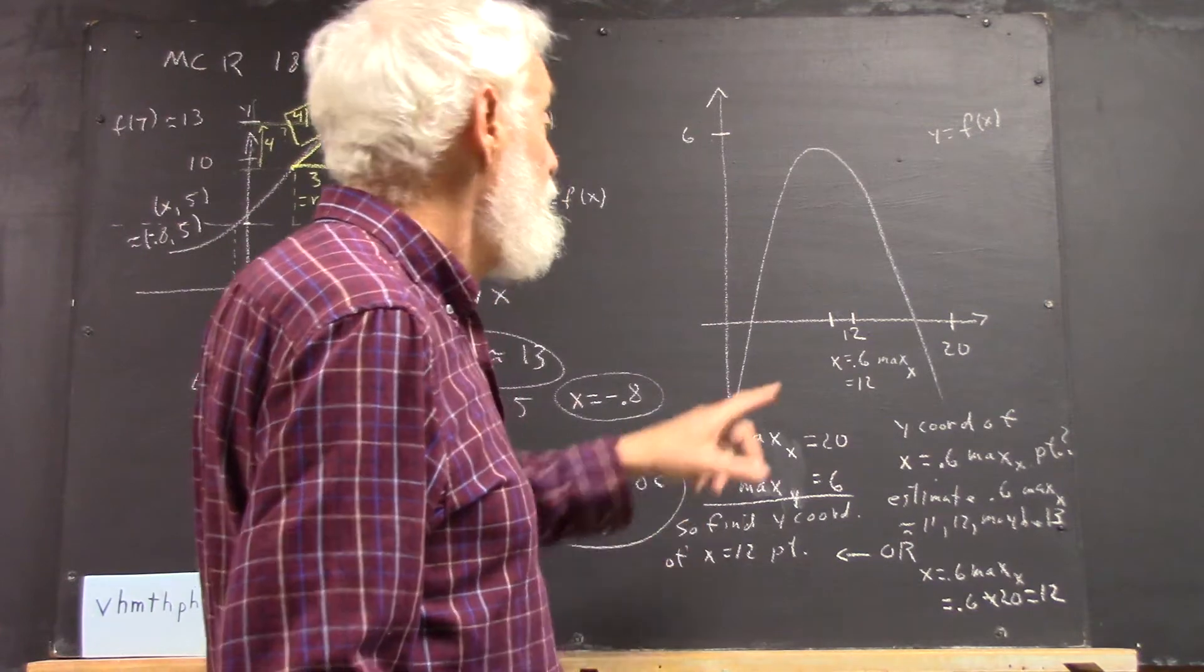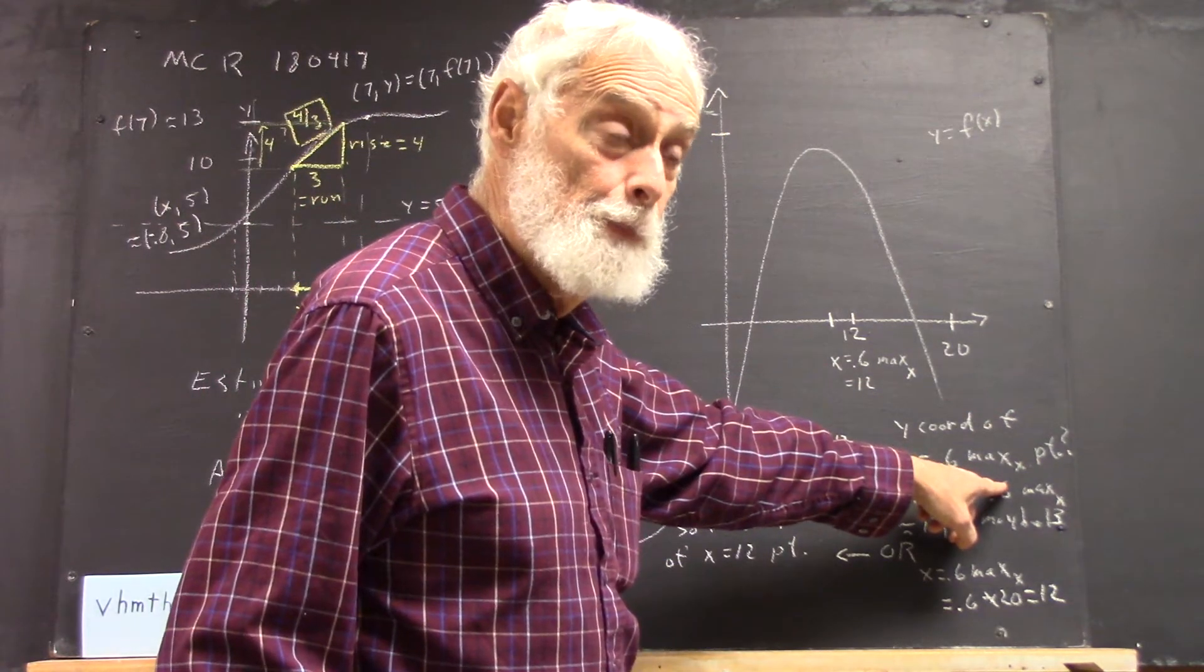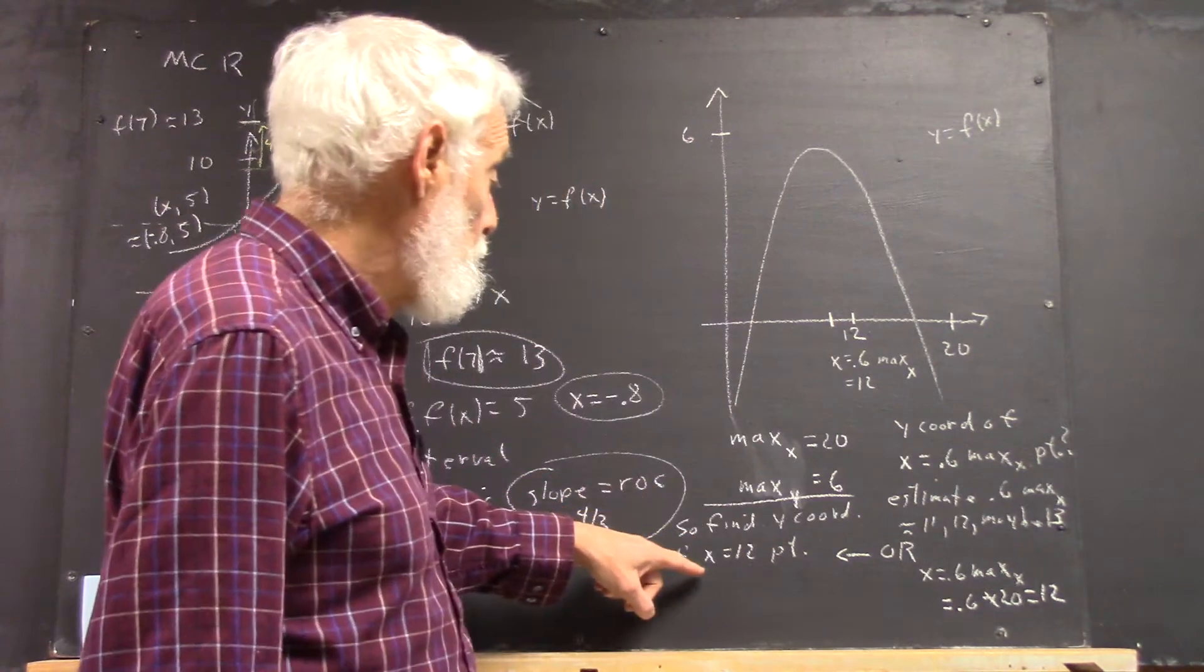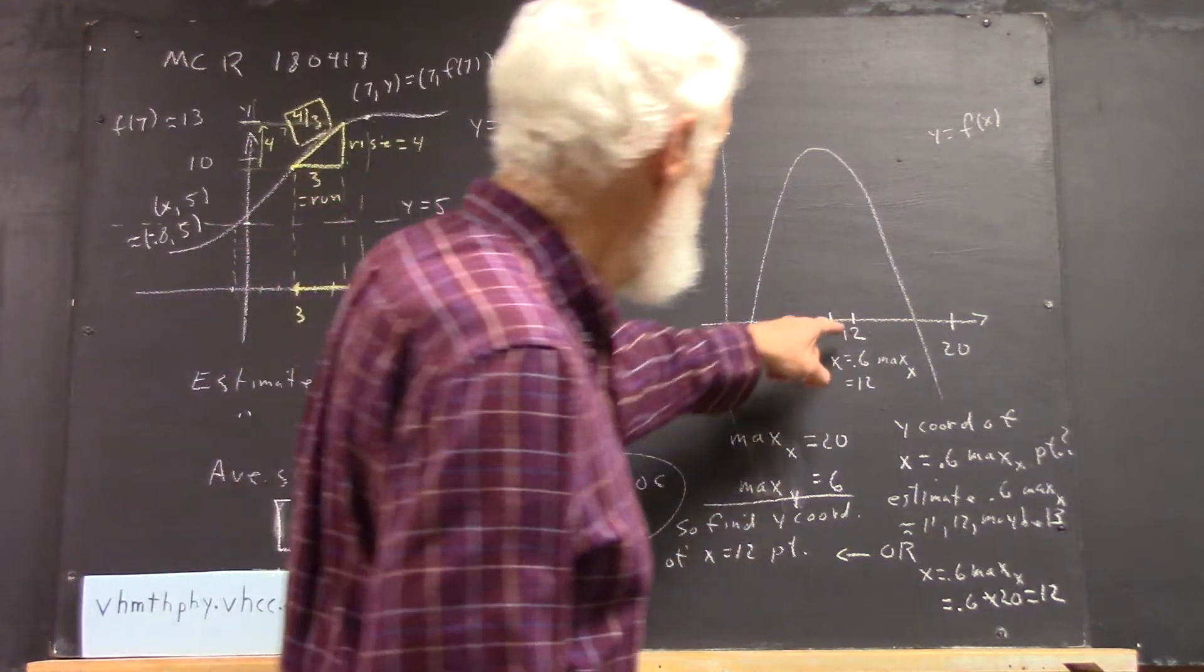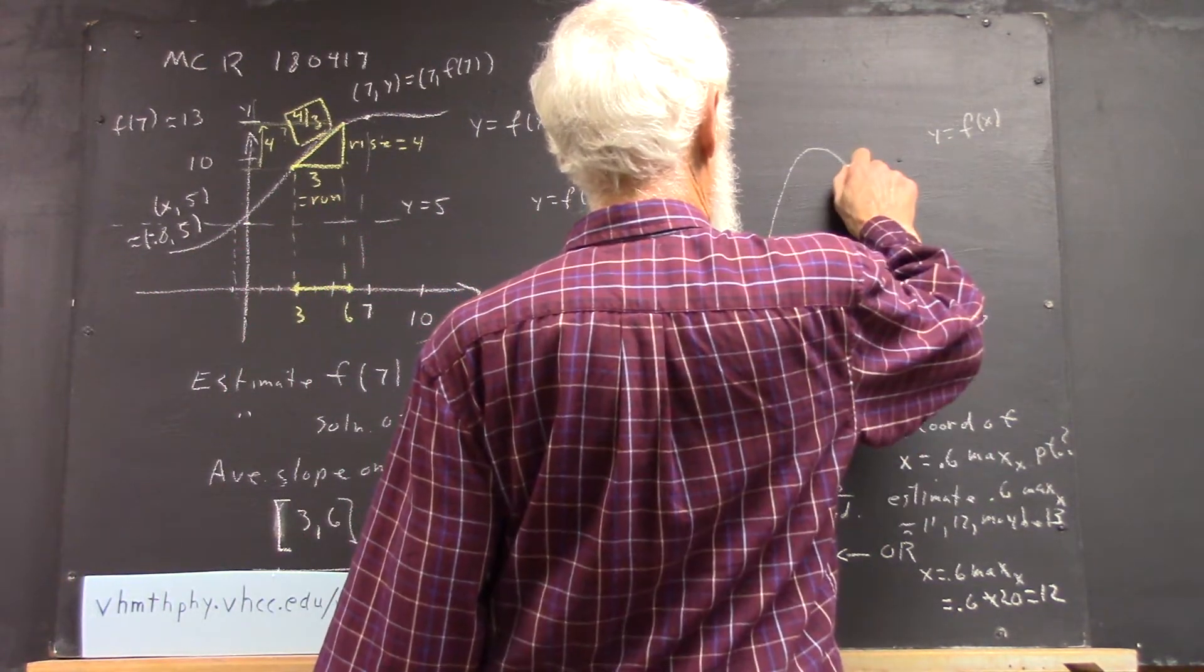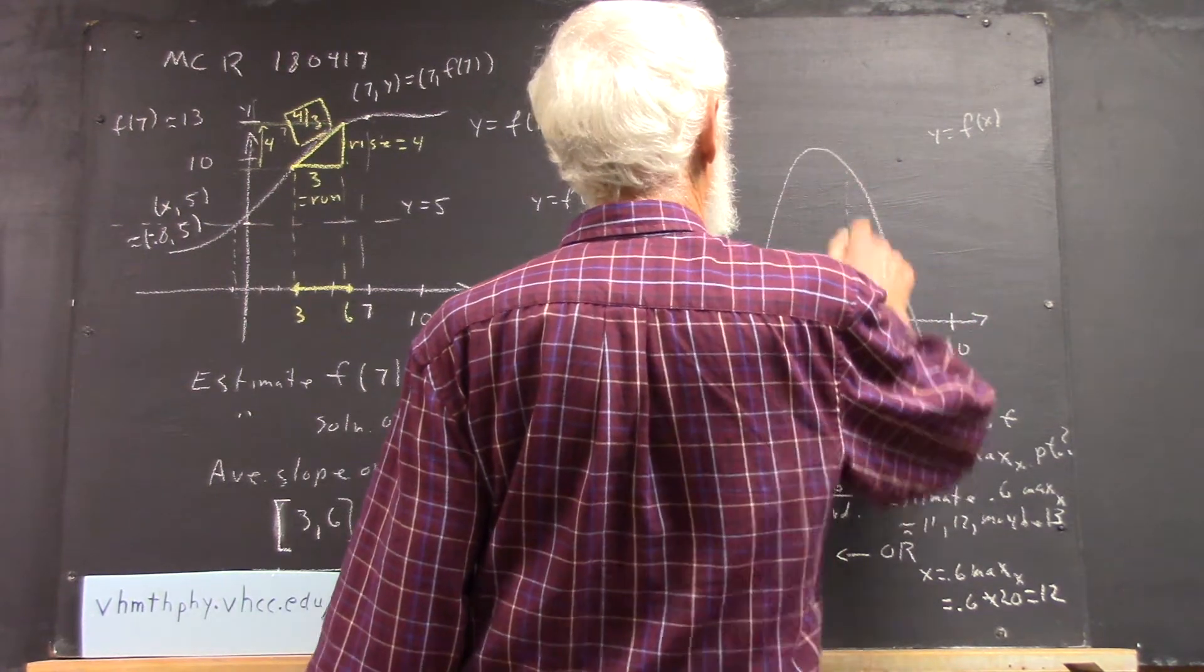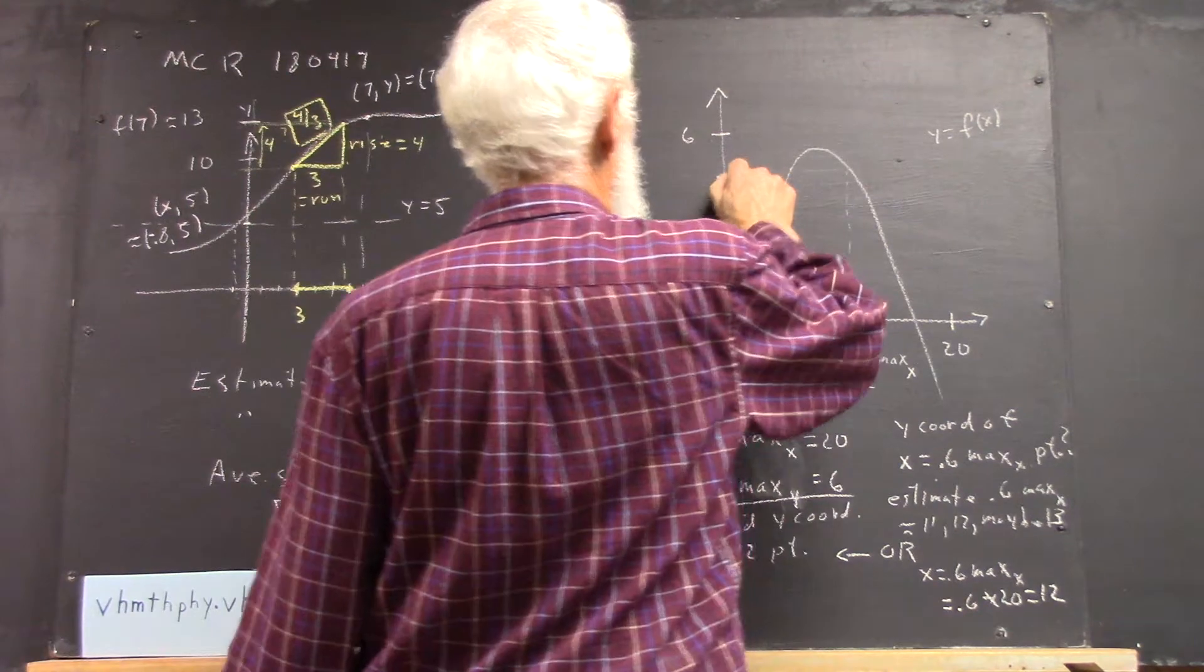So we want to find the y coordinate of the x equals 0.6 max of x point, so it's asking for the y coordinate of the x equals 12 point. So there it is. To find the y coordinate, we just project straight up, project over, and there it is.